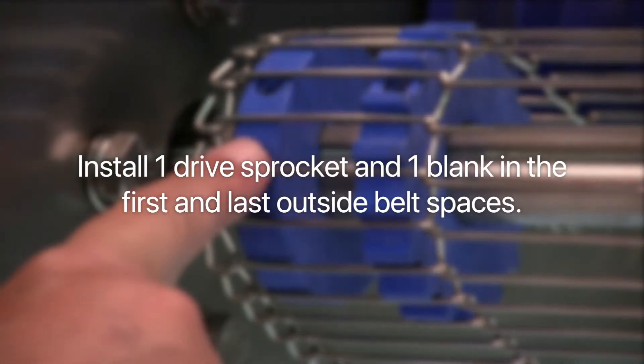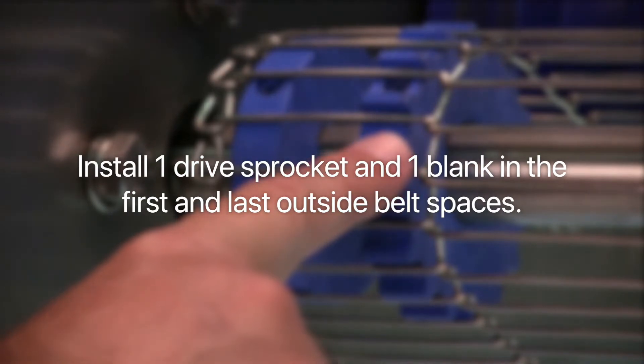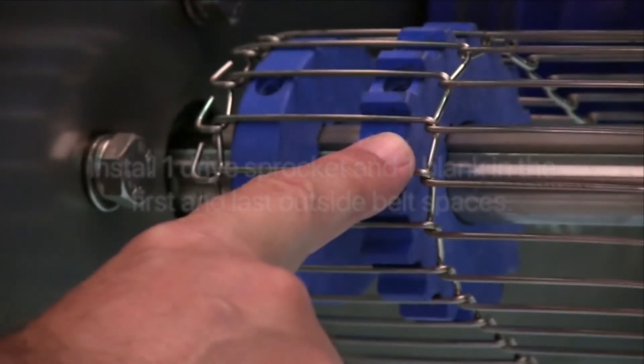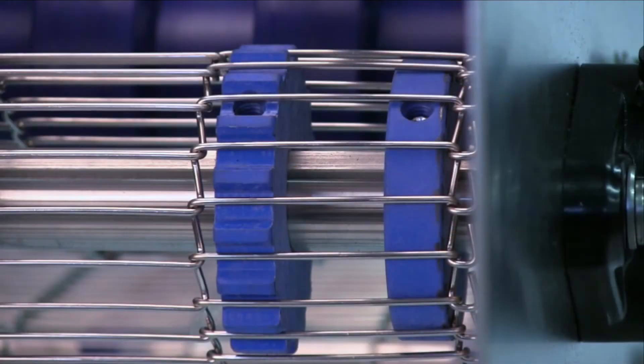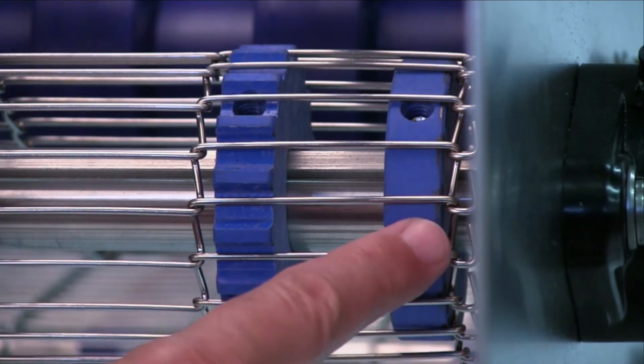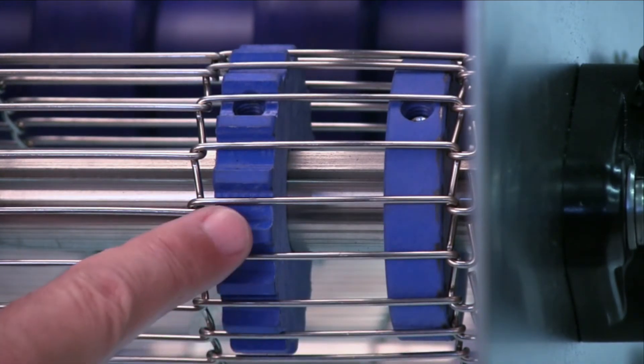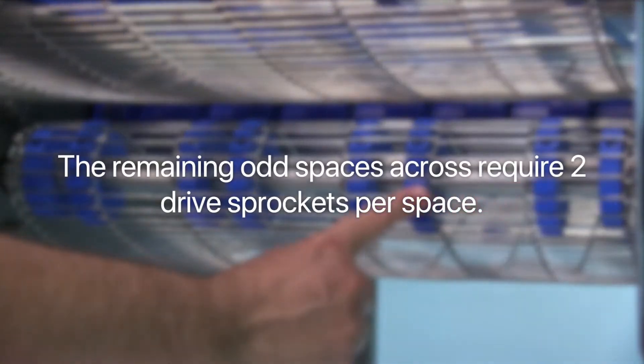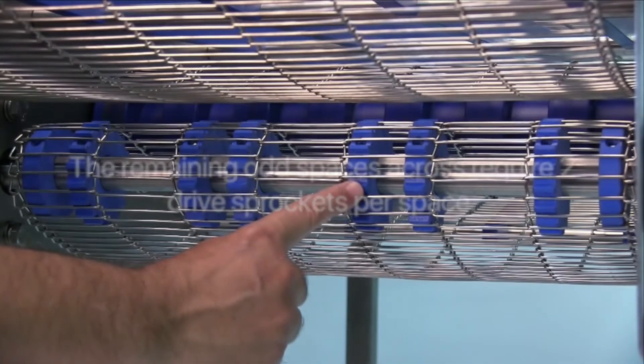Install one drive sprocket and one blank in the first and last outside belt spaces. The remaining odd spaces across require two drive sprockets per space.